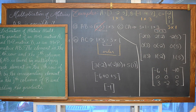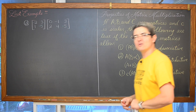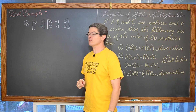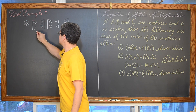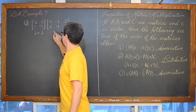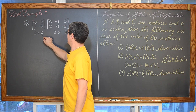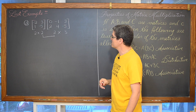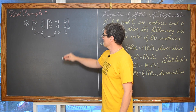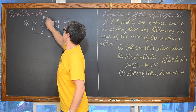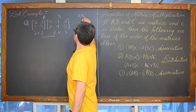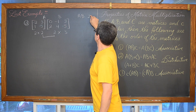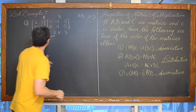Let's go ahead and multiply a 2 by 2 matrix by a 2 by 3 matrix for our last example. We are taking this 2 by 2 matrix and multiplying it by this 2 by 3 matrix. The columns of the first match the rows of the second, so our final answer matrix AB is going to have the order of 2 by 3.